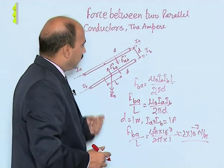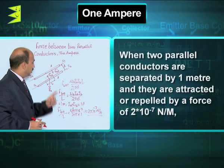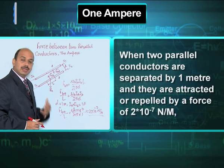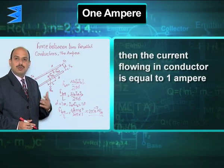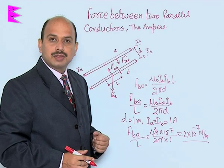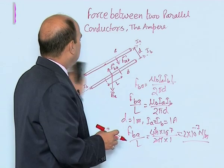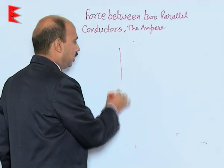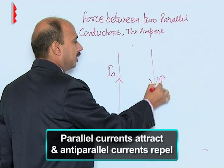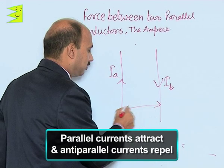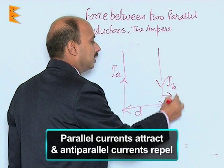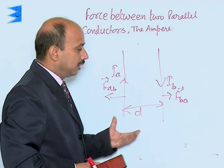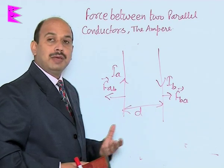From this we can define 1 ampere: when two wires are placed at a distance of 1 meter in vacuum and attract or repel each other with a force of 2 × 10⁻⁷ Newton per meter, the current flowing through each conductor is equal to 1 ampere. If the two conductors carry currents in opposite directions, separated by distance D, they will repel each other — F_BA and F_AB point away — but the magnitude of the force per unit length remains the same.